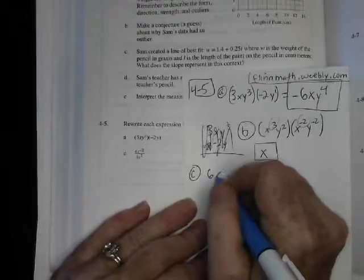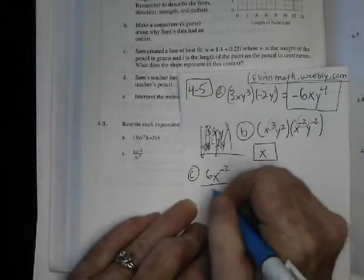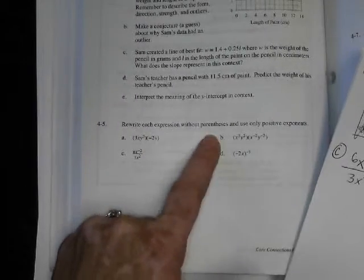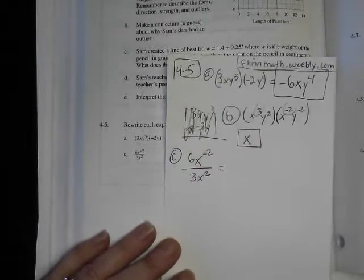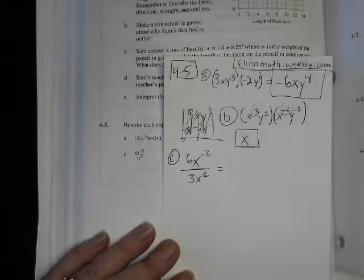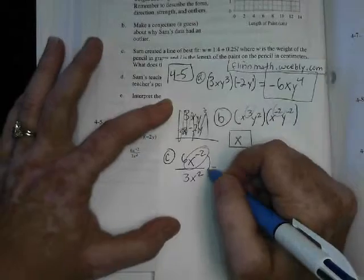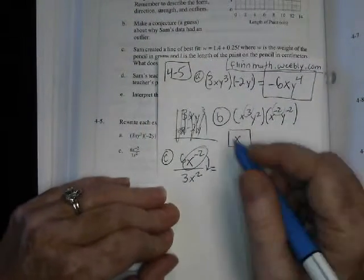Okay, so here's the next one, letter C. Can you see that? Yeah, 6X to the negative two over 3X squared. Now there's no parentheses, because remember it said rewrite without parentheses and use only positive exponents. I don't have any parentheses. How can I get positive exponents? That's the question. Move him to the basement? Yeah.